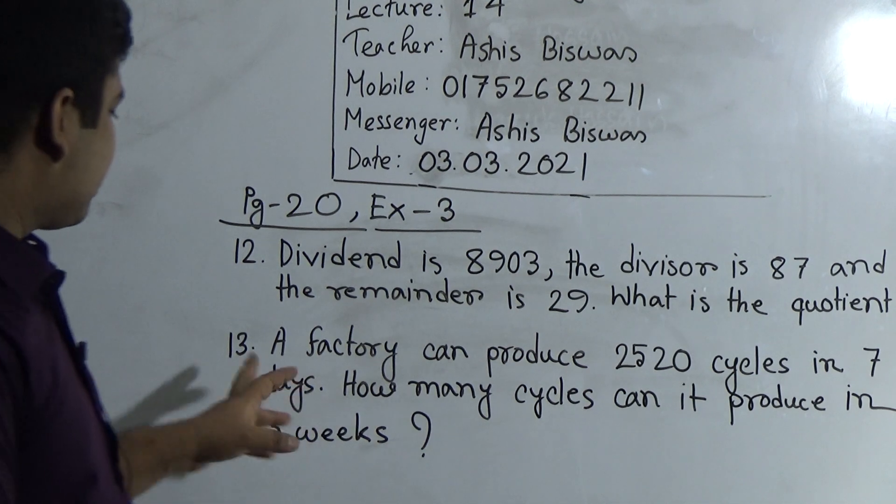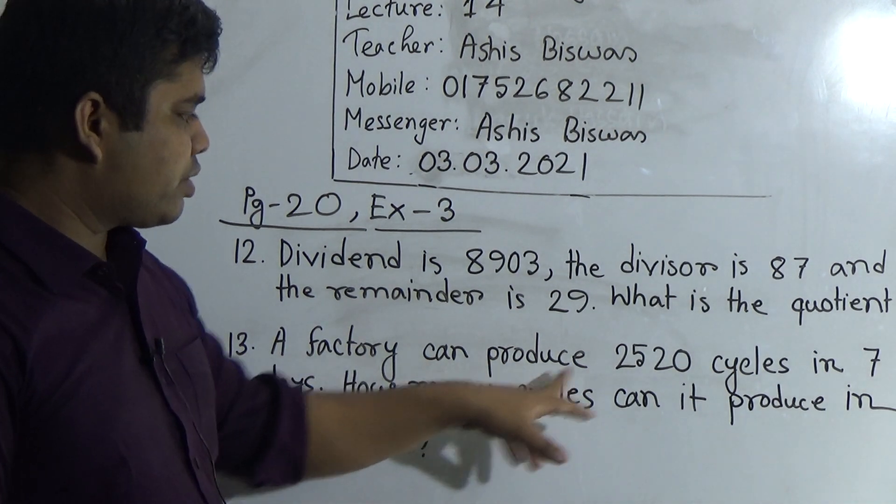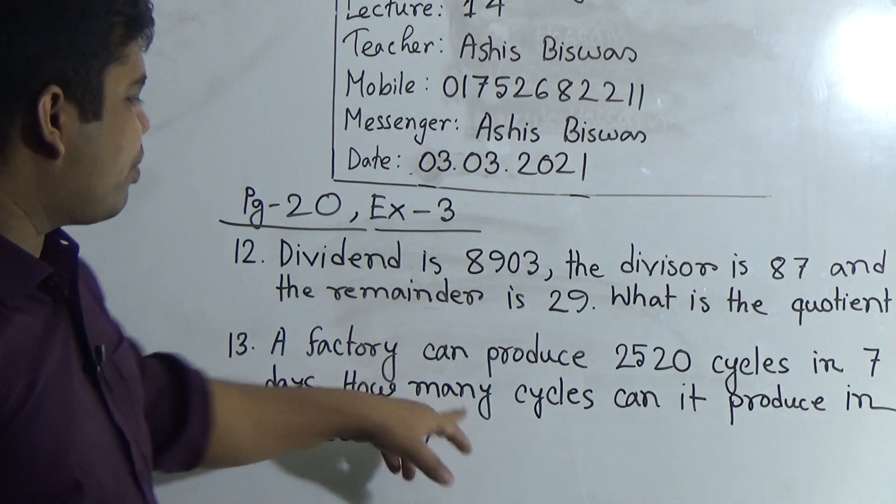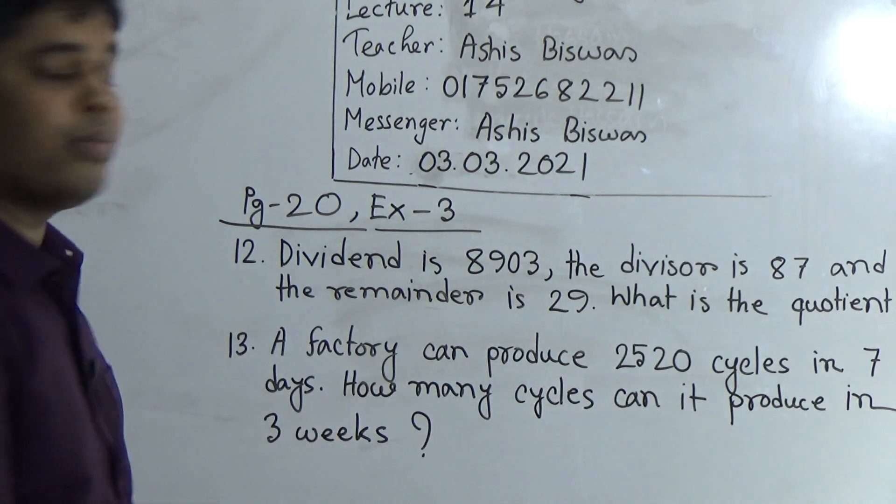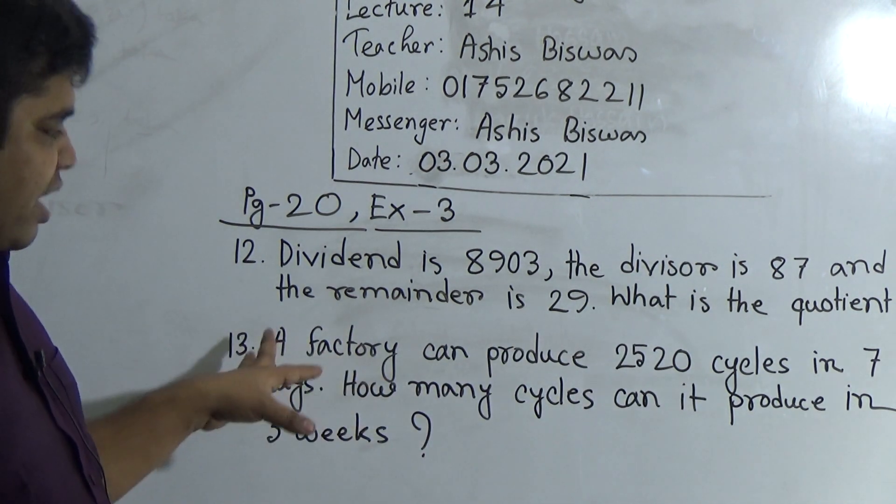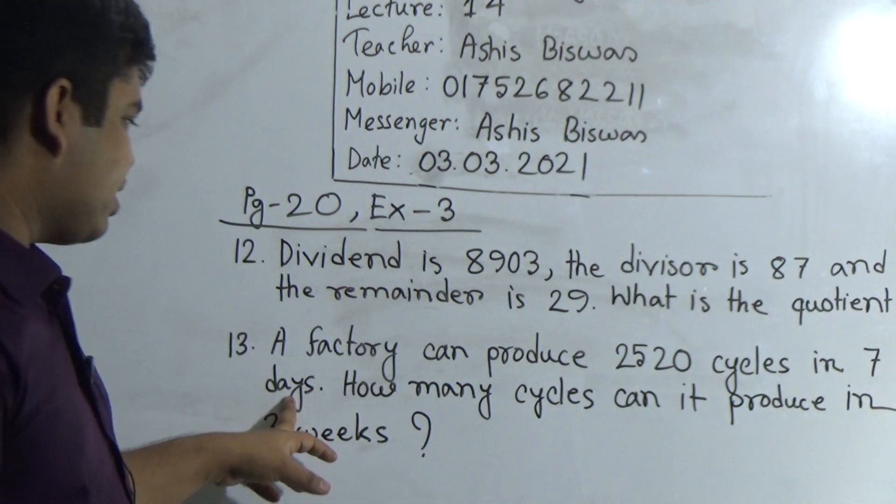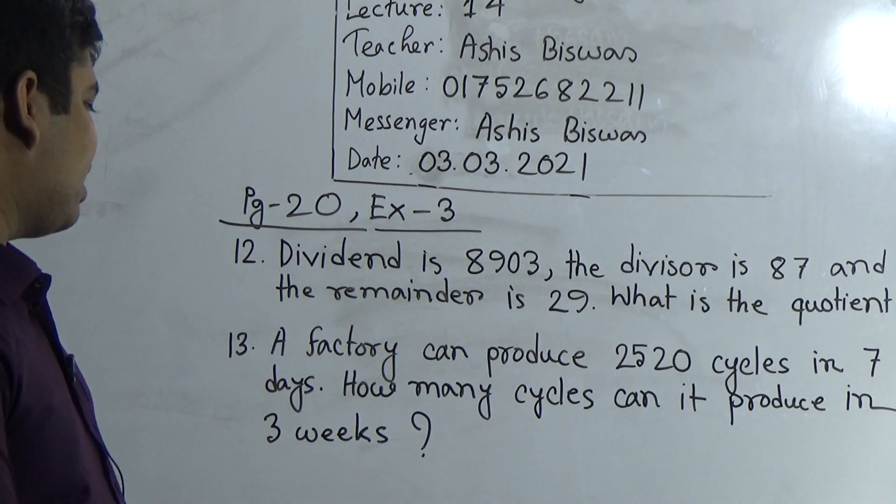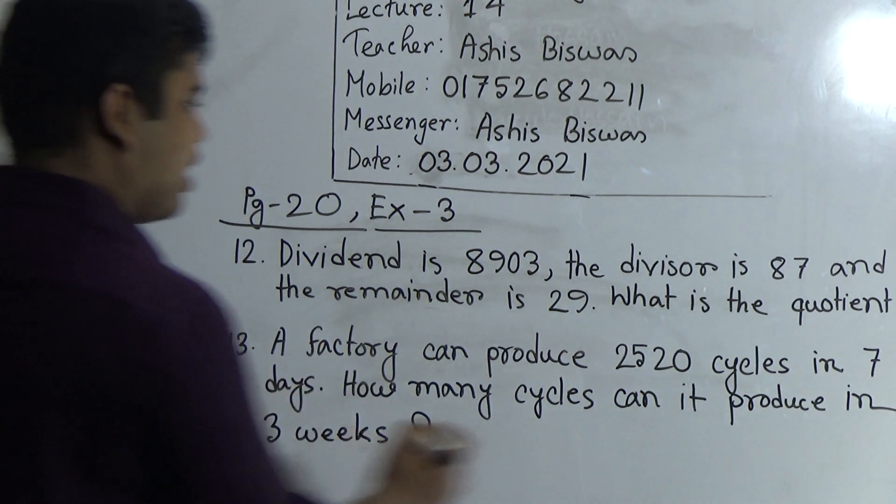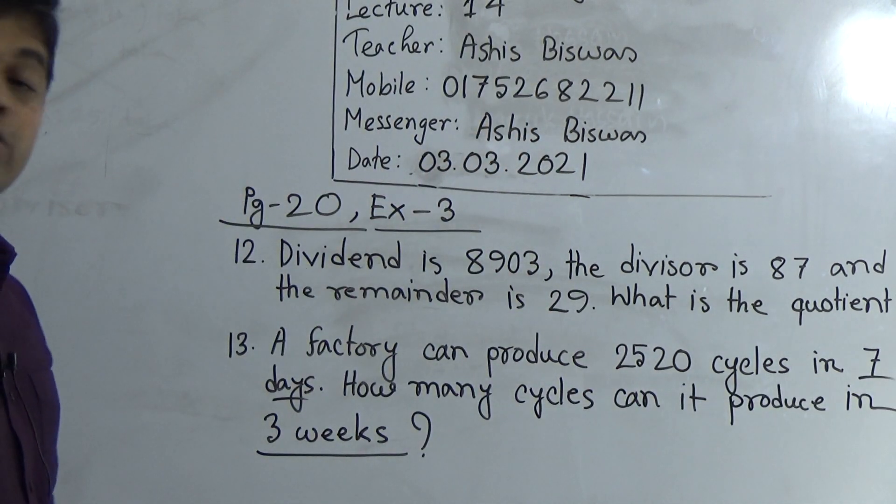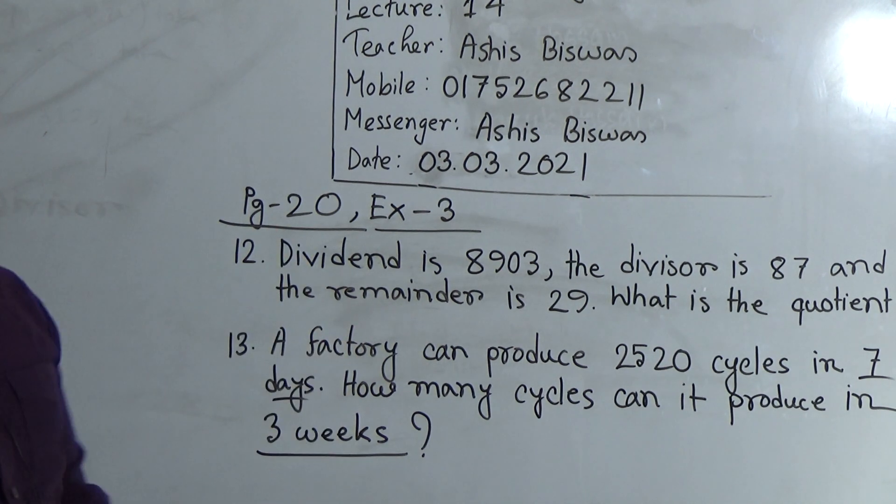First, we read the question. Question 13: A factory can produce 2520 cycles in 7 days. How many cycles can it produce in 3 weeks? Dear students notice, here 7 days and here 3 weeks. Both are different. We need to convert to the same unit. So we convert this 7 days into week. We know that 7 days equal to 1 week.